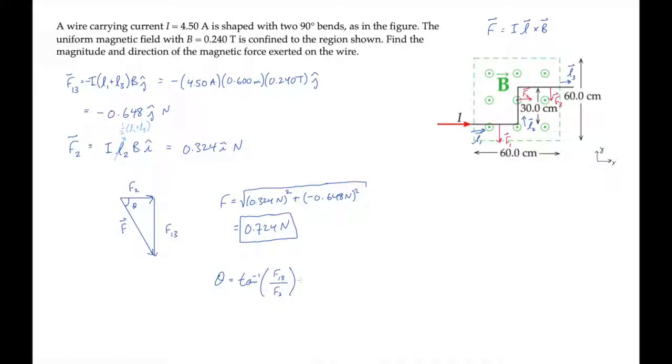That ratio is 2 as we saw above. So theta turns out to be the inverse tangent of 2 which is 63.4 degrees.